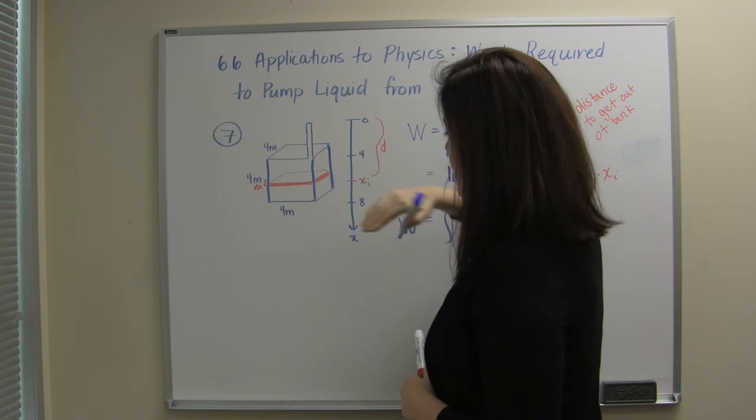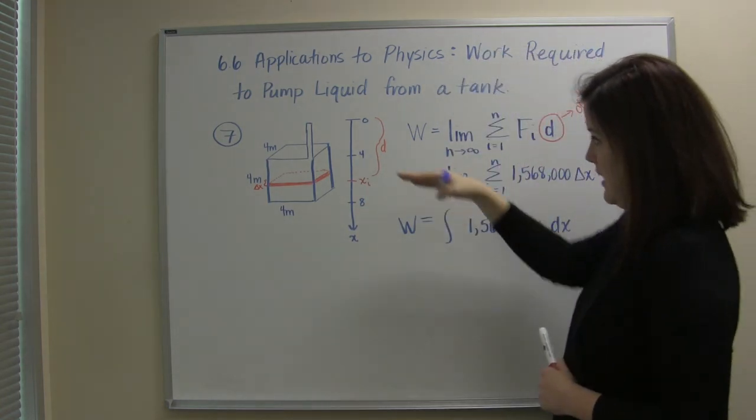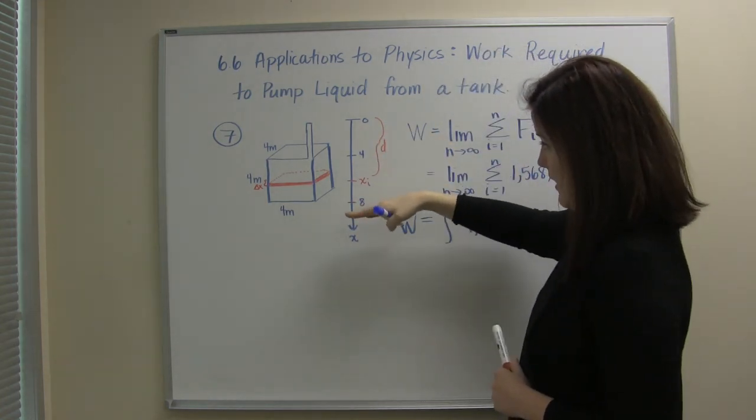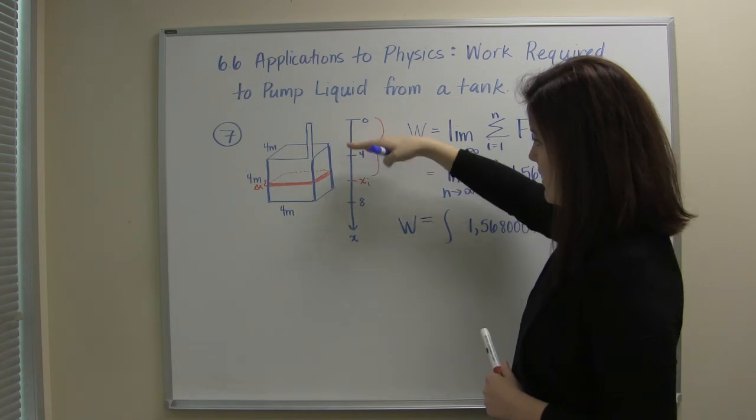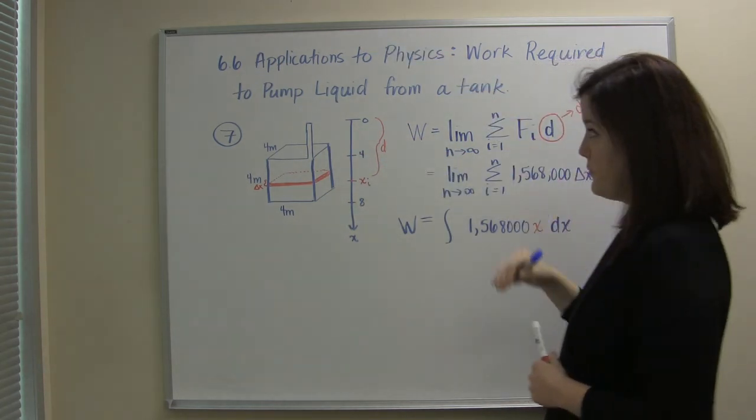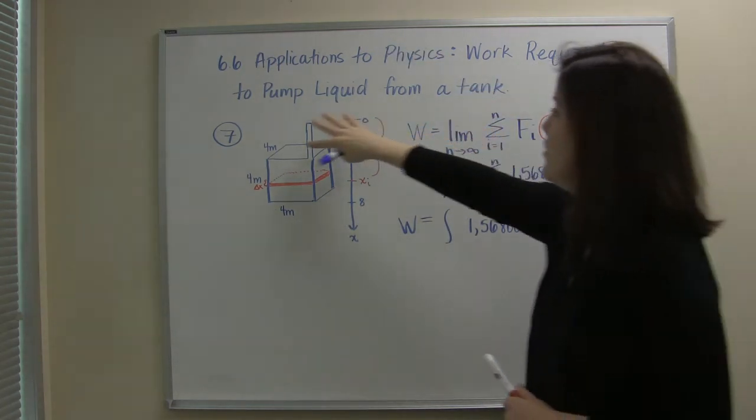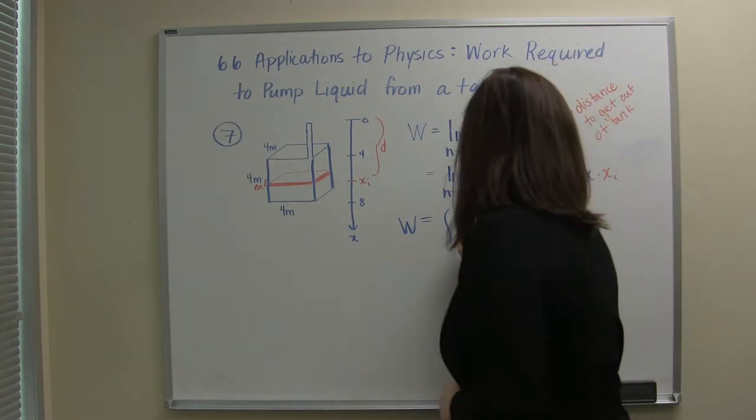So where the water exists that we need to lift is from four to eight. So we need to lift all of the water on our axis from four to eight to get up and out. So we don't want to use zero to four there's no water up here. So our bounds of integration are four to eight.